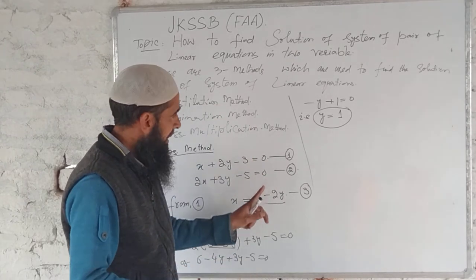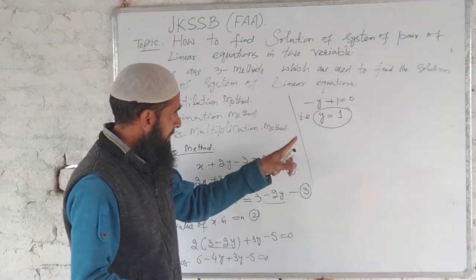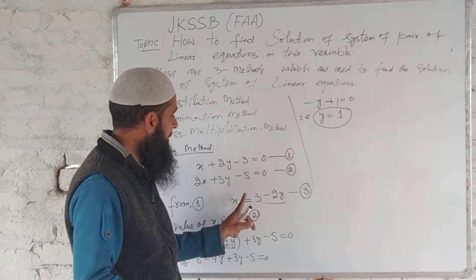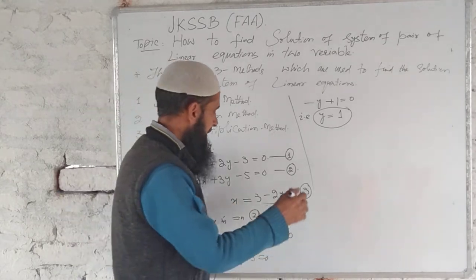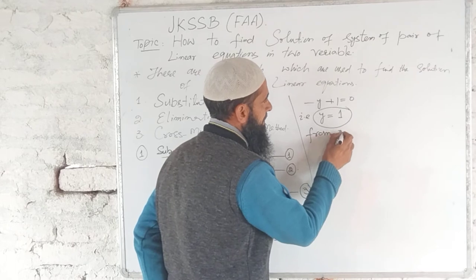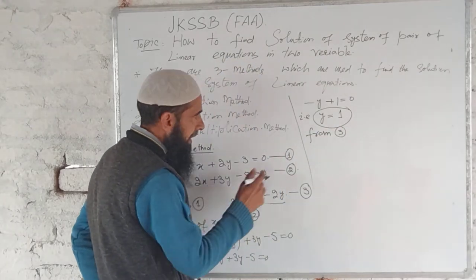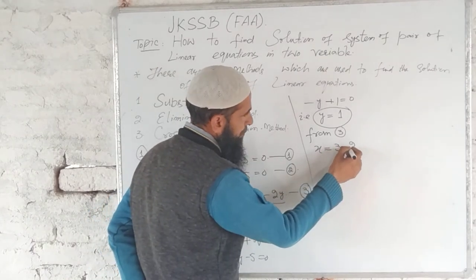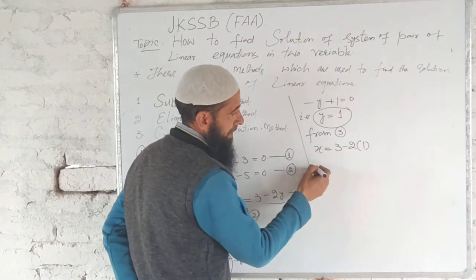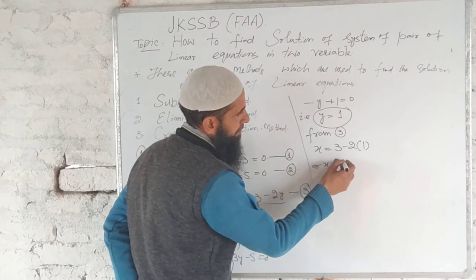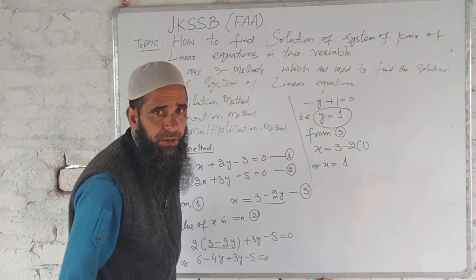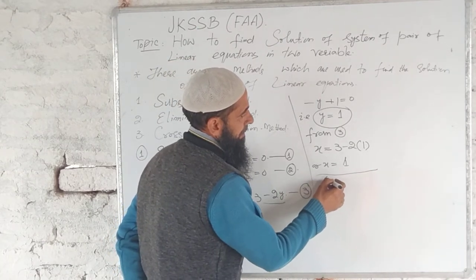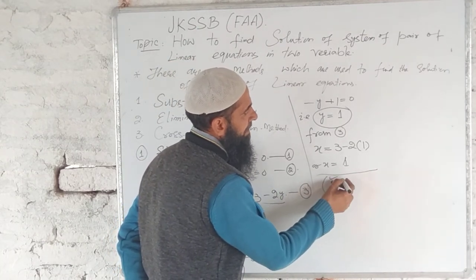You have y value as 1. You can substitute y value in equation third. X is equal to 3 minus 2y, substitute y equals 1, x equals 1. Therefore, your required solution is 1, 1. X is 1, Y is 1.